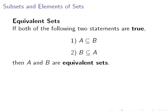Equivalent sets: if both of the following statements are true—A is a subset of B and B is a subset of A—then the sets A and B are equivalent sets. That means that A and B are identical to one another.